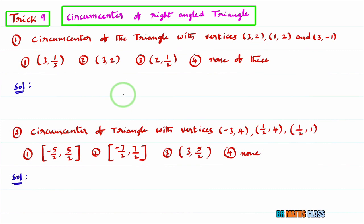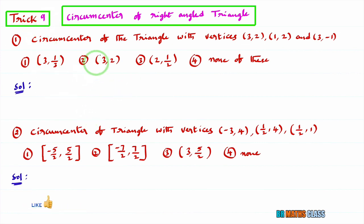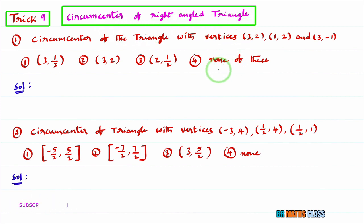Hello Friends, I am Balaji Rav. Welcome to PRMAX class. This is Trick No. 9: Finding Circumcenter of a Right-Angled Triangle. When we can observe that given vertices form a right-angled triangle, calculating the circumcenter is very easy.